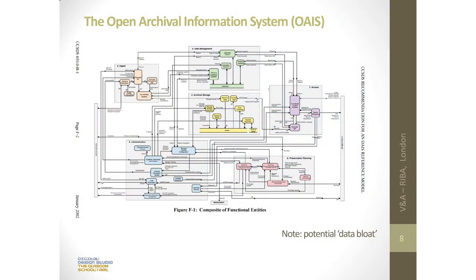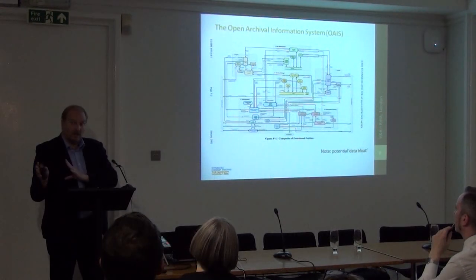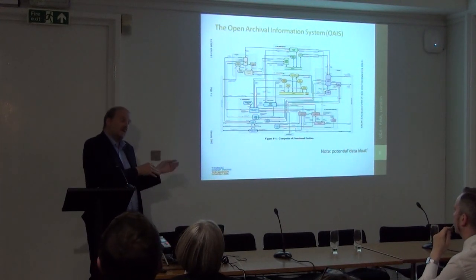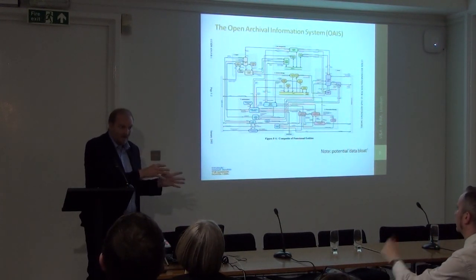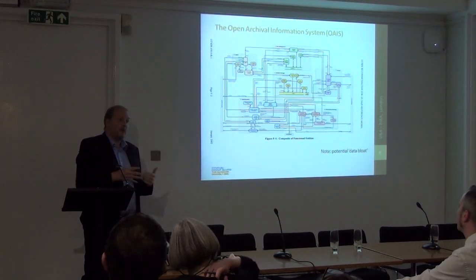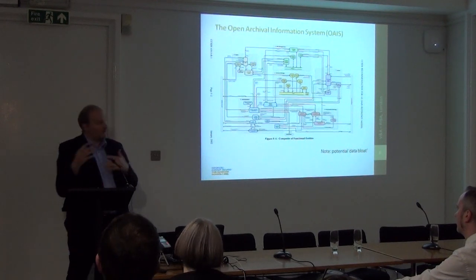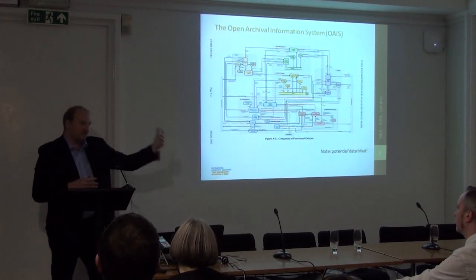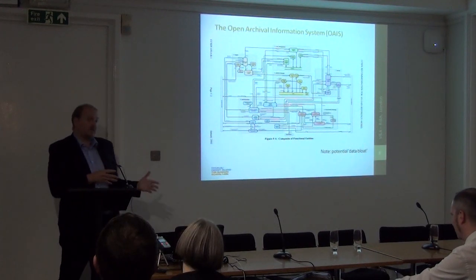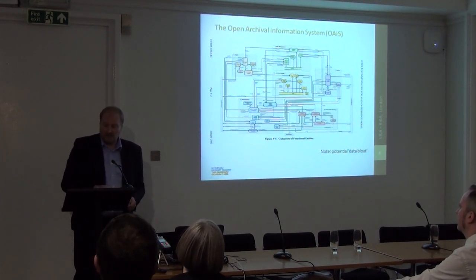This slide on the OAIS model will be familiar. The reason I'm showing it is to highlight the notion of data bloat. We have submission information packages, archival information packages, and dissemination information packages. If they're managed according to this model, it's entirely feasible that a file received at 100 megabytes becomes an archival version of 150 megabytes, plus a dissemination version of another 50 megabytes. It's quite easy to double or triple the data volume and number of files you're managing through the OAIS process.